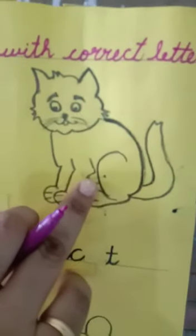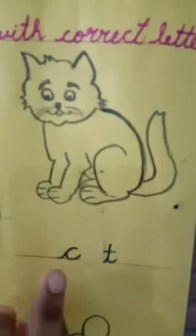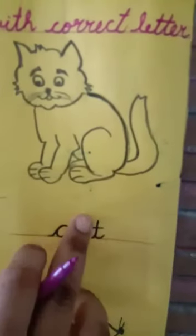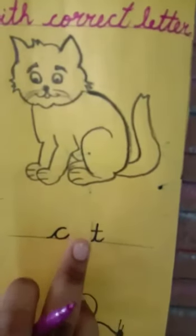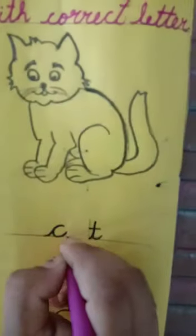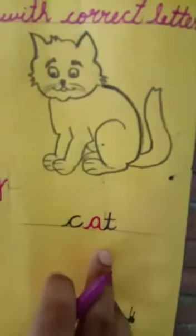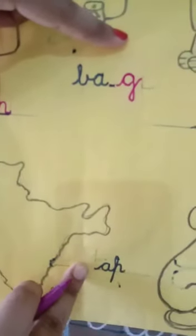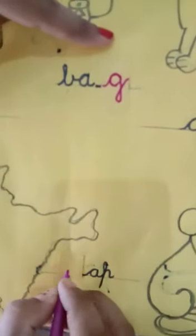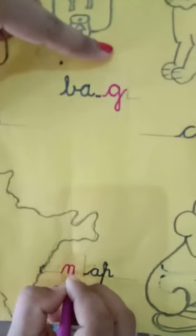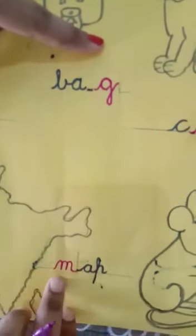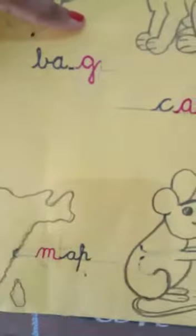Now, which animal is this? Cat. C-T. Which letter comes to the middle? Yes. A. C-A-T. Cat. Now, this is map. Map. So, first sound is what? M. First sound is M. Map. So, here it is M. M says m. M-A-P. Map.